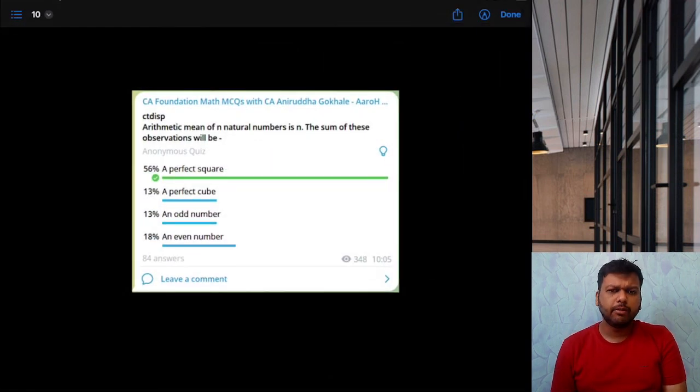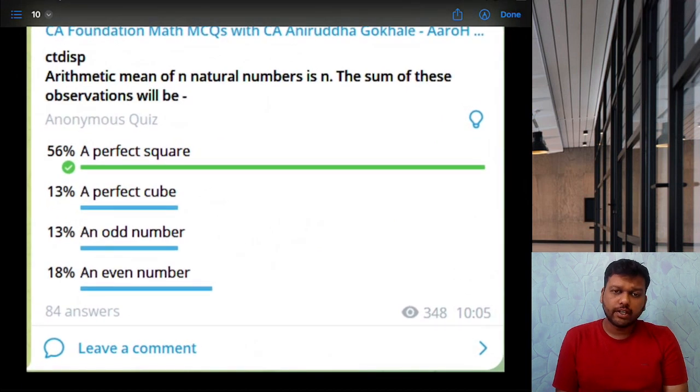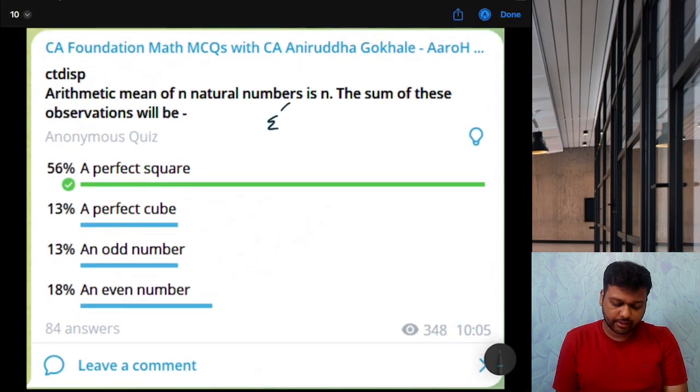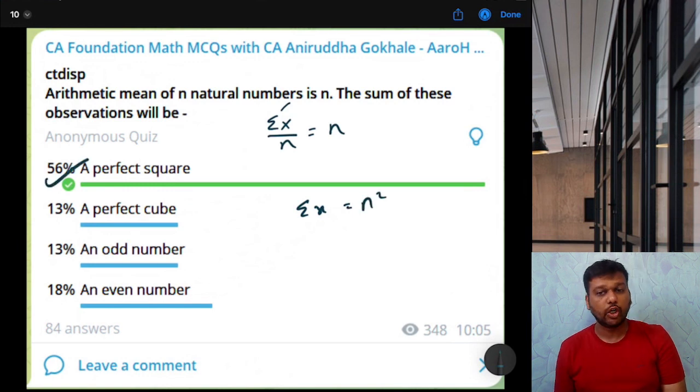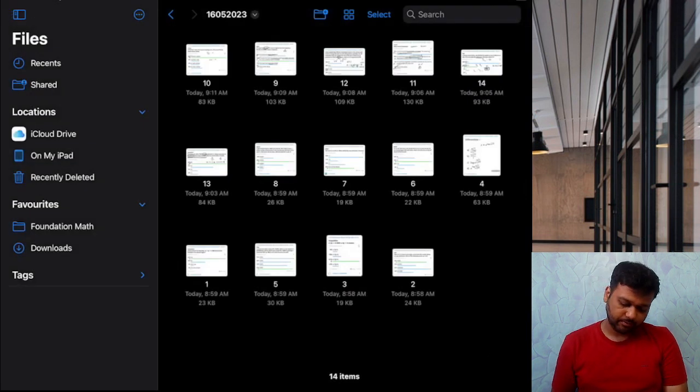Next, arithmetic mean of N natural numbers is N. The sum of these observations will be. What is arithmetic mean? Summation X upon N, right? N observations. And I have given arithmetic mean is N. So sum of these observations, that is summation X will be what? N square. N square will be perfect square. Option A.